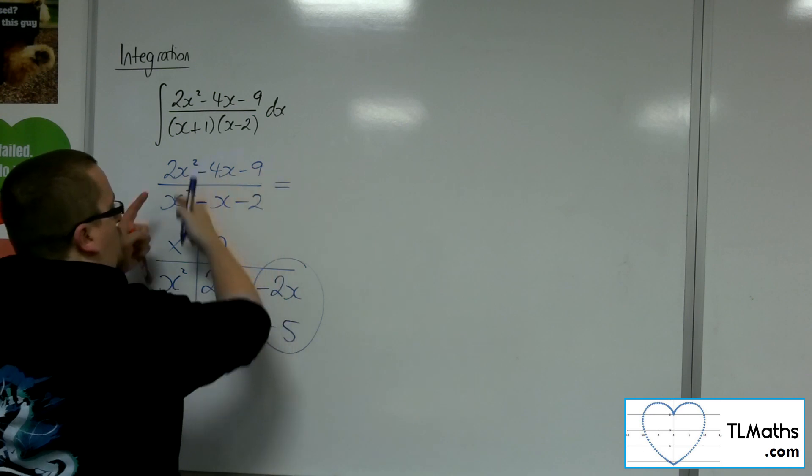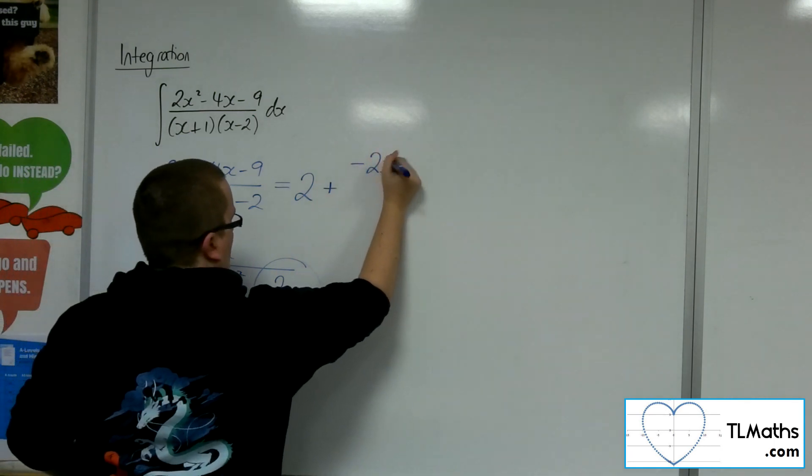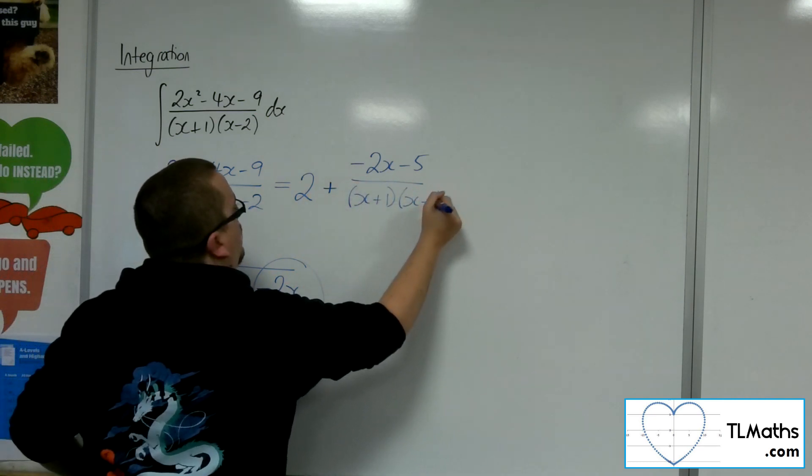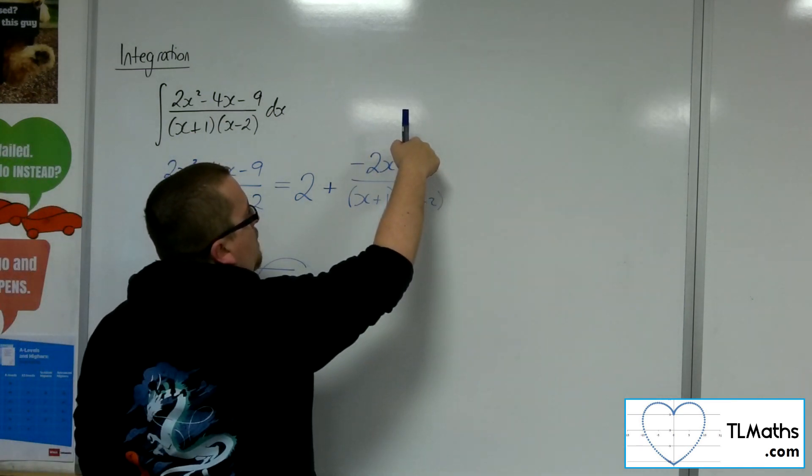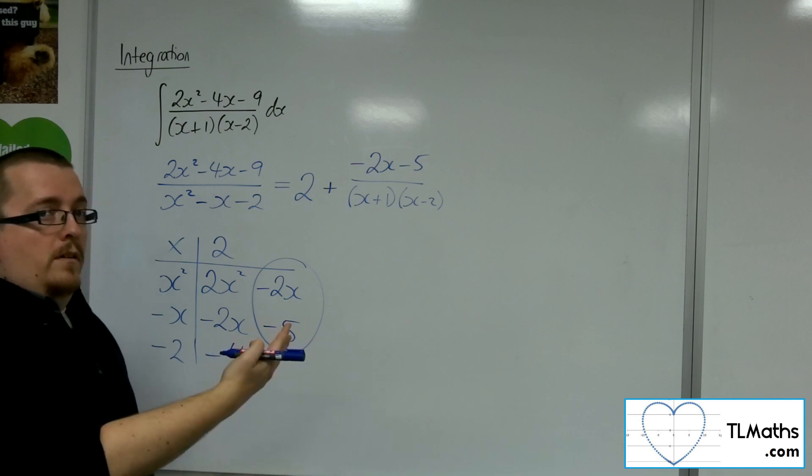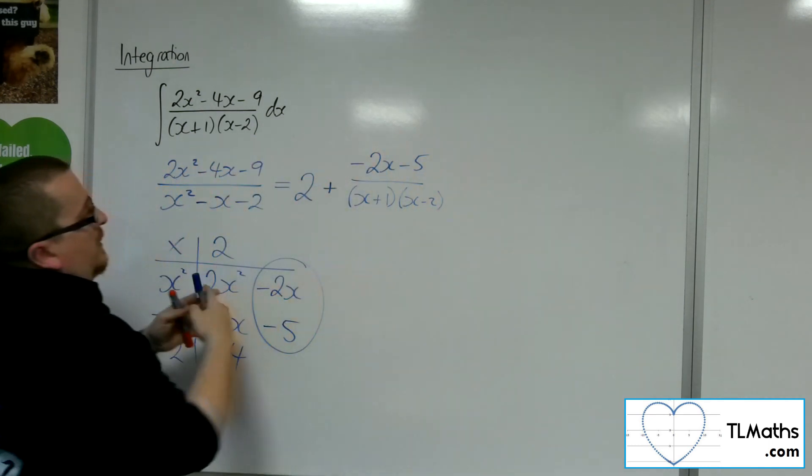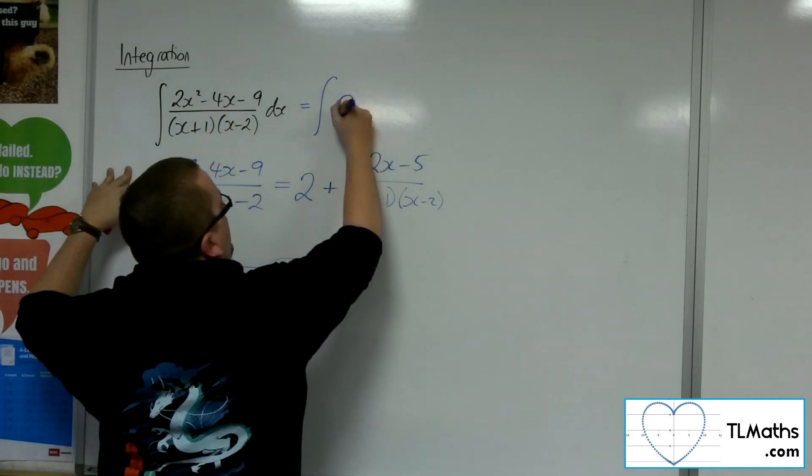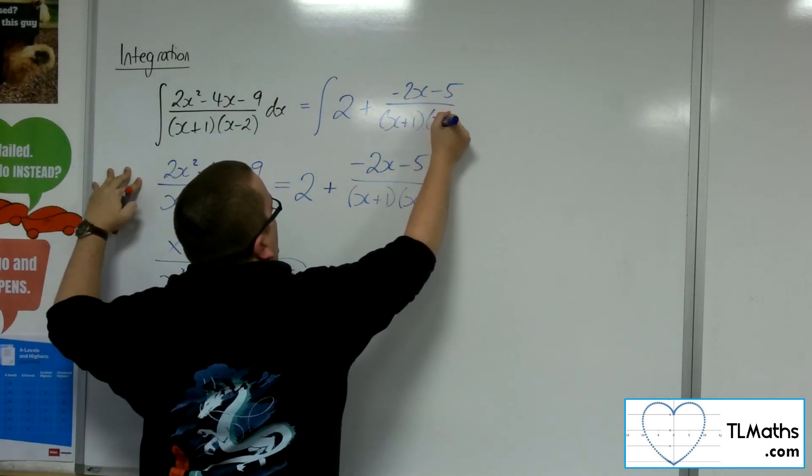So we can now write this fraction as 2. And then it's plus minus 2x minus 5 over the x plus 1x minus 2. So I'll put it back into factorised form. Now because of that minus 2x minus 5, I could factor the minus out. I'm not going to bother in this case. I don't want to have to deal with a negative there and then two positive fractions. So I can now say this integral will be the same as integrating 2 plus minus 2x minus 5 over x plus 1x minus 2.